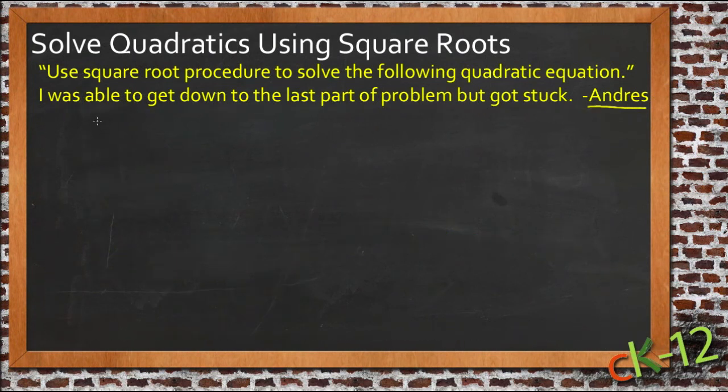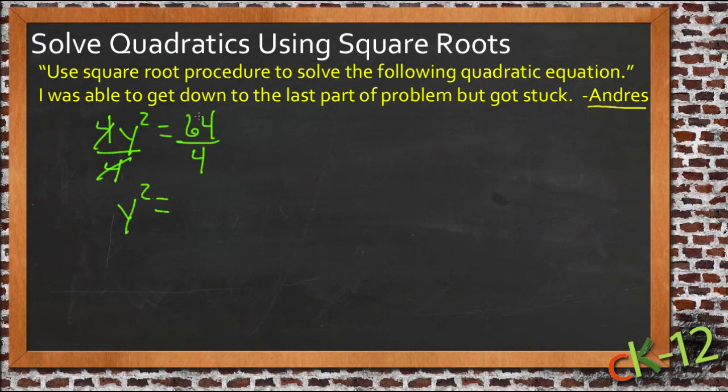Make a little space for ourselves here. Let's try 4y squared equals 64. So again, very similar. First thing we'll do is divide both sides by 4. Both sides by 4, 4s cancel, we get y squared equals 64 divided by 4. Well, half of 64 is 32, and half of that is 16, so that gives us y squared equals 16.